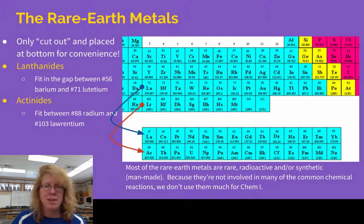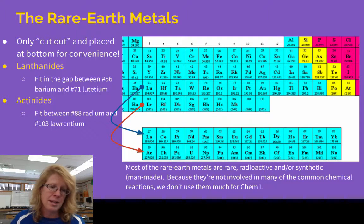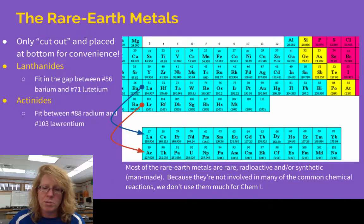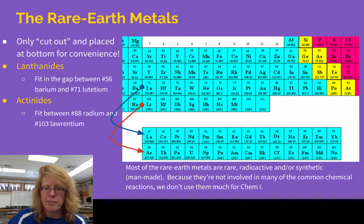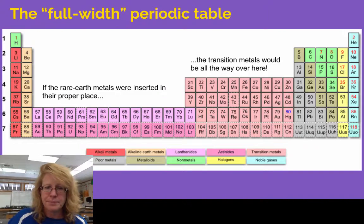The top row starting with lanthanum is called the lanthanides. The bottom row starting with actinium is called the actinides. If you call them rare earth metals, that's enough — we'll visit them occasionally but not very often.